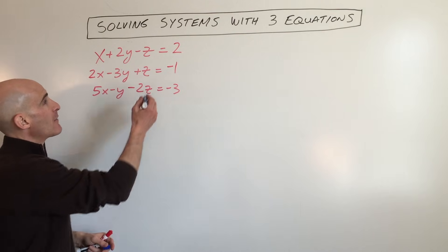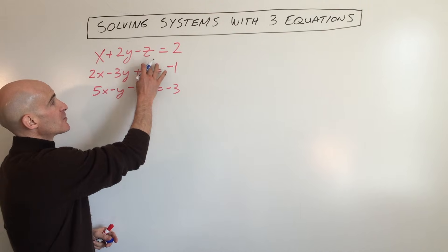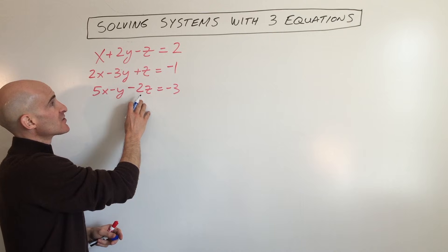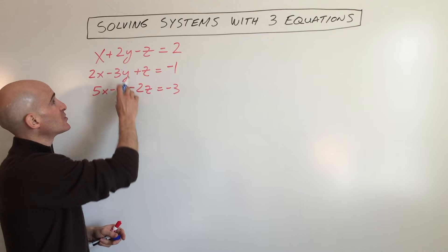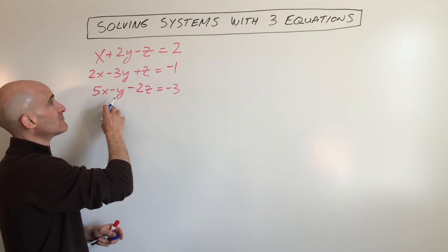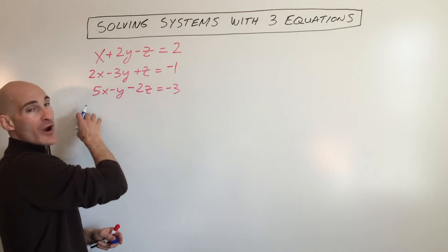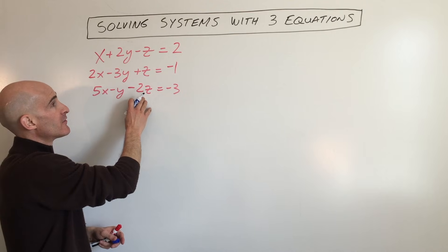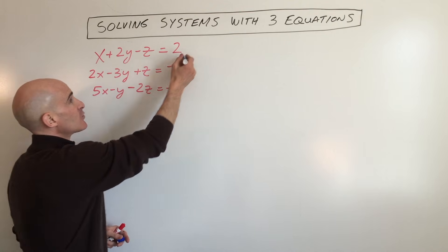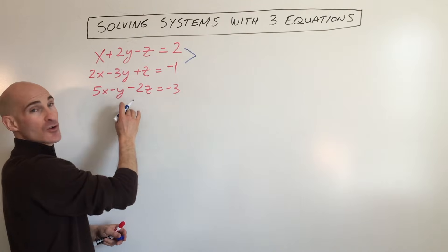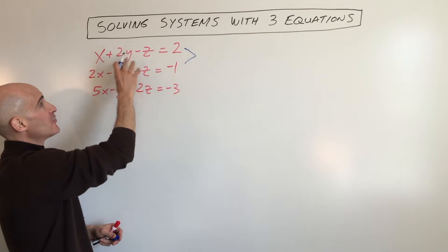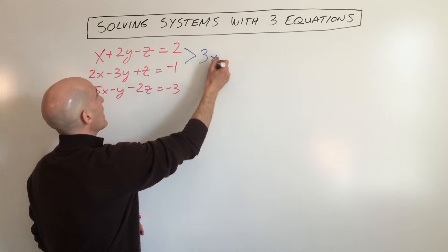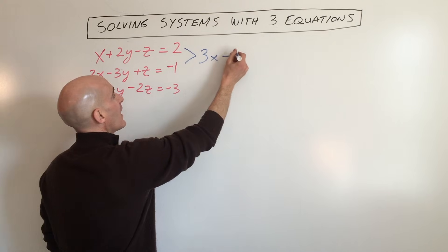We use all three equations. I'm going to start by trying to eliminate one of the variables. We're going to pick z, because it looks like that's going to be the easiest to eliminate. But you could start with eliminating y's or x's. Let's go ahead and eliminate the z's first, and we'll do that by combining the first and the second equation. If we add those together, we get 3x minus y.